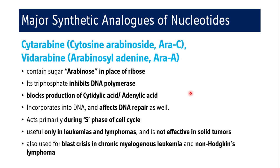Cytarabine (cytosine arabinoside, AraC) and vidarabine (arabinosyladenine, AraA) contain the sugar arabinose in place of ribose. Their triphosphate form inhibits DNA polymerase, blocking production of cytidylic acid and adenylic acid. They get incorporated into DNA and also affect DNA repair. They act primarily during the S phase of the cell cycle. These agents are useful in leukemias and lymphomas — including blast crisis in chronic myelogenous leukemia and non-Hodgkin's lymphoma — but not in solid tumors.